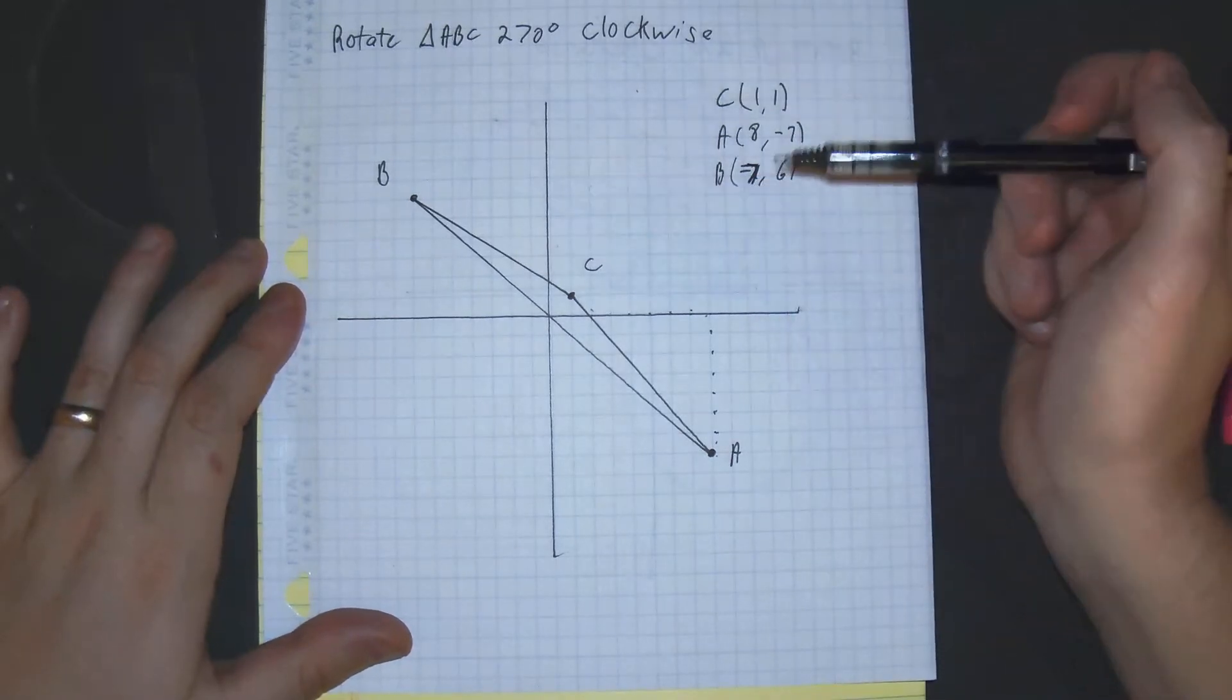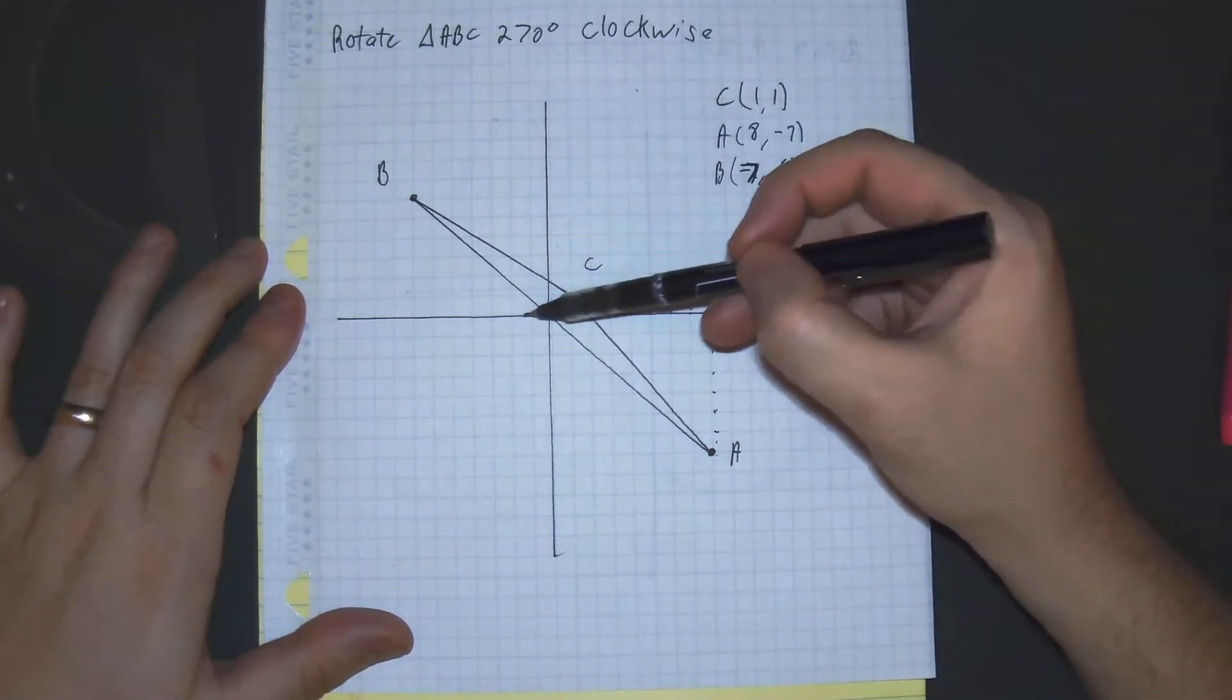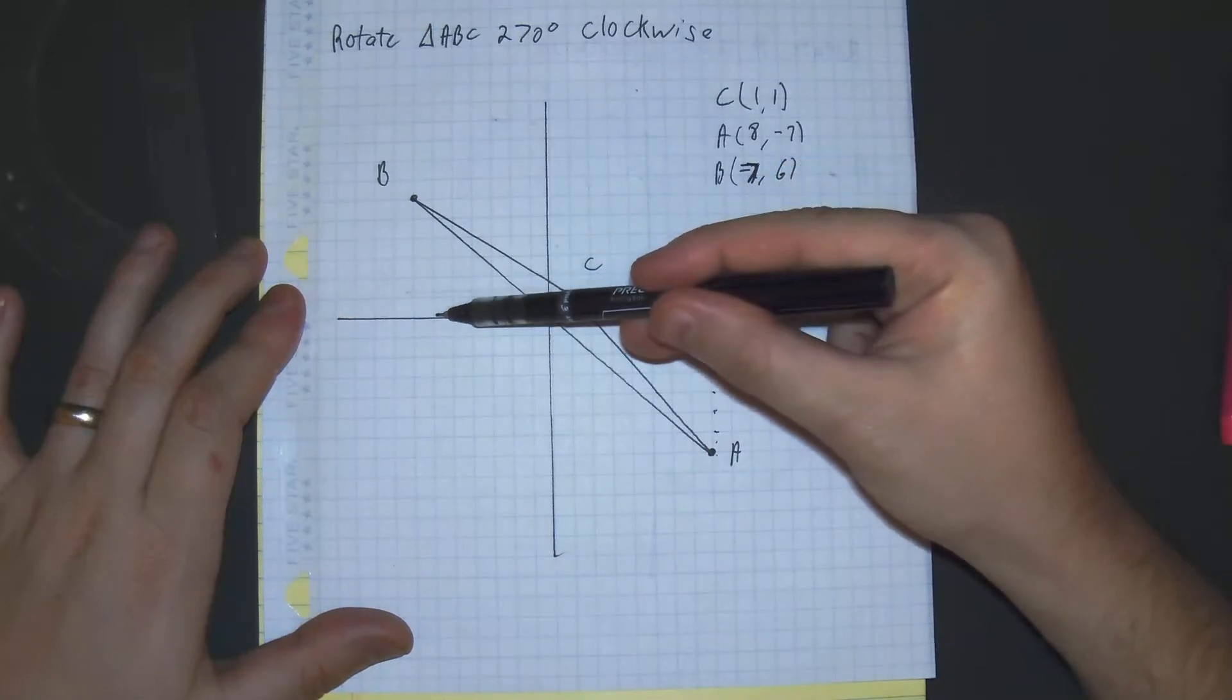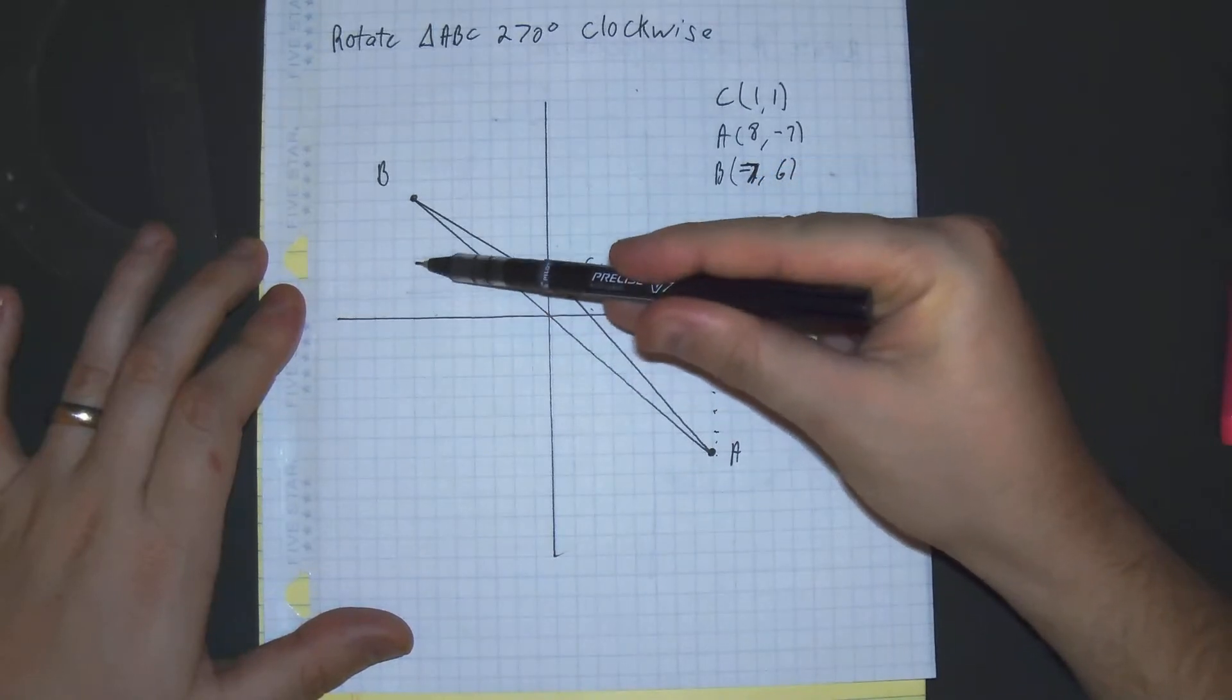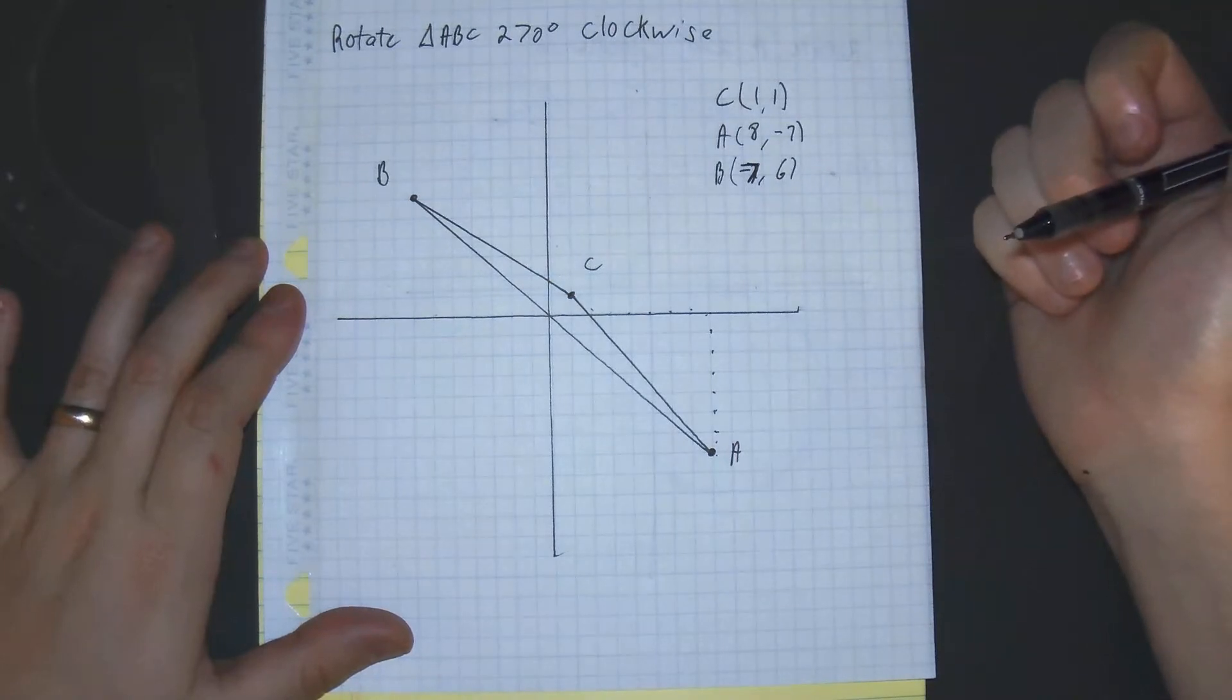Alright, so we should have done everything. Let me just do one more double check. Counting: 1, 2, 3, 4, 5, 6, 7, and 1, 2, 3, 4, 5, 6. Everything seems fine. Perfect.